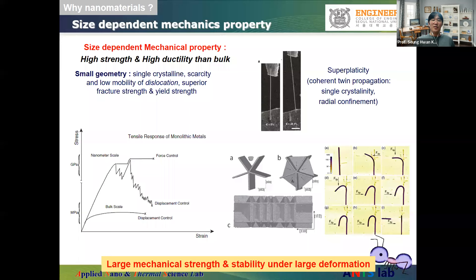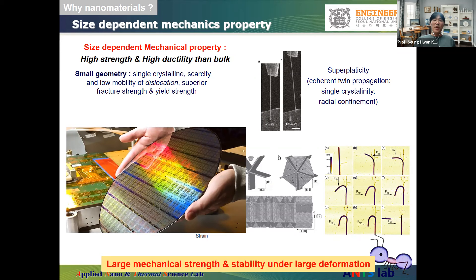The third interesting characteristic is the size-dependent mechanical property. When system size gets smaller, the strength and ductility of nanomaterials increase compared with the bulk. For example, single-crystalline silicon is one of the most fragile materials, and it is hard to imagine bending a silicon wafer 90 or 180 degrees. However, this is possible if the same material is made into a nanowire — silicon nanowires can bend almost 108 degrees. This enhanced mechanical property plays a very important role in developing wearable electronics that undergo various mechanical deformations.